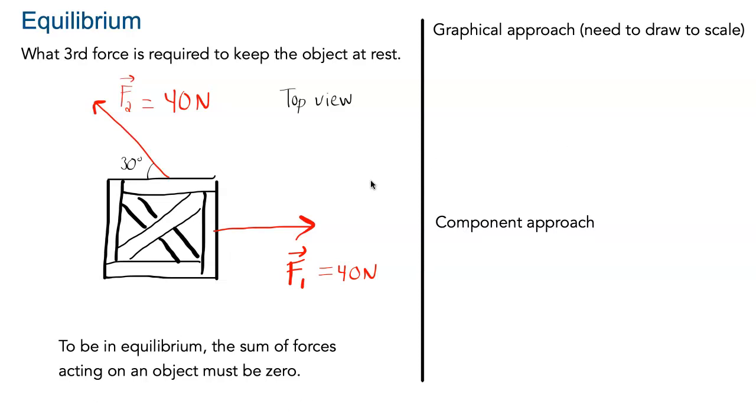In the graphical approach, what we want to do is just take each of the vectors that we have and add them tip to tail. So here I have my vector F1, my vector F2 will look something like that. They have to be the same length because they're both 40 newtons, but the angle will be different.